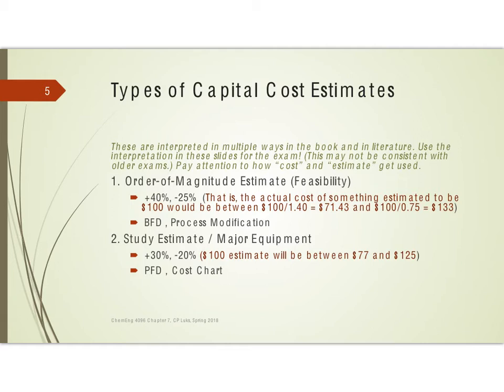If you take that $100 and divide by 1 plus 0.3, or divide by 1 minus 0.2, you're going to see that a $100 estimate would be between $77 and $125.